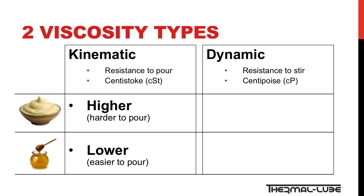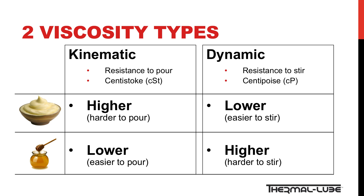Now, if we try to stir mayonnaise and honey with a spoon, which one is easier? The mayonnaise. So honey has a greater resistance to stir than mayonnaise, and therefore a higher dynamic viscosity. Now we can begin to understand that dynamic viscosity is important in starting machinery, while kinematic viscosity is important when machinery is already running.